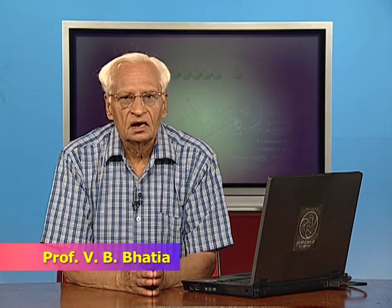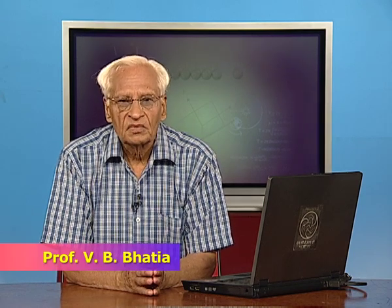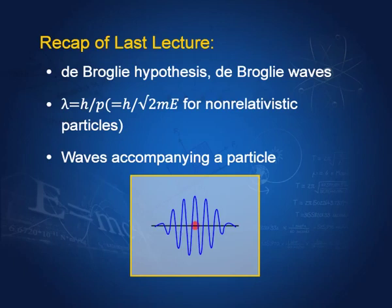In the last lecture we discussed the de Broglie hypothesis, according to which each material particle has a wave associated with it and the wavelength of this particle is lambda equal to h by p, where h is Planck's constant and p is the momentum of the particle. If this particle is non-relativistic, then lambda is equal to 1 by square root of 2mE.